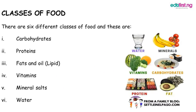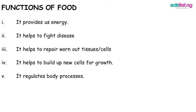Generally, we have six classes of food. These are: carbohydrates, proteins, fats and oils — also known as lipids — vitamins, mineral salts, and water.